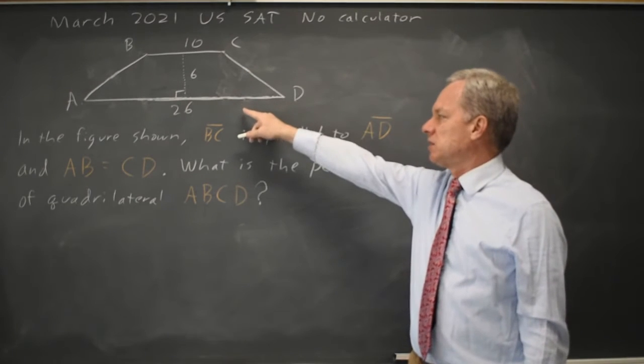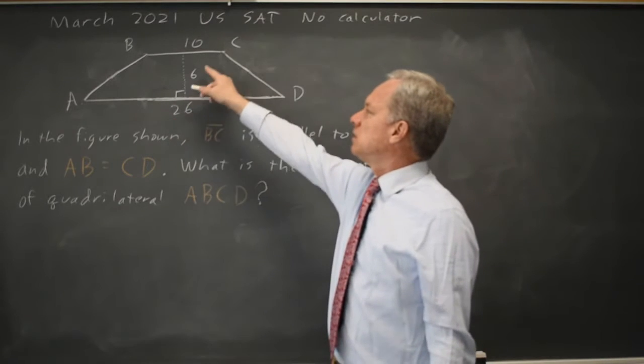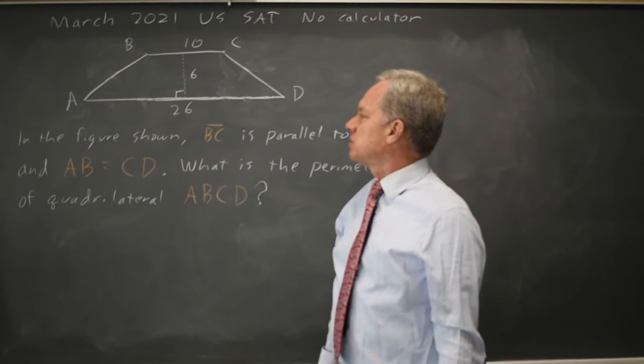Top and bottom are parallel. They just refer to it as a quadrilateral, but this is a trapezoid. The height is 6, the top is 10, and the base is 26.